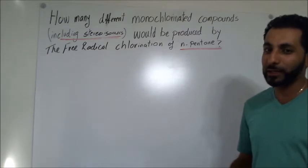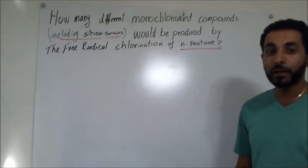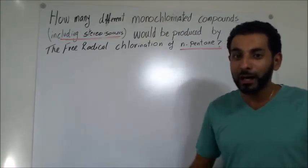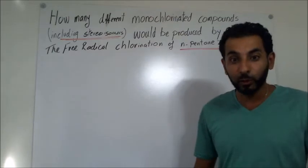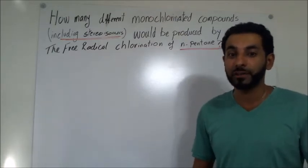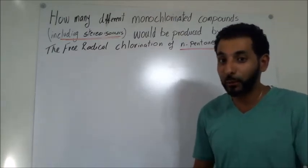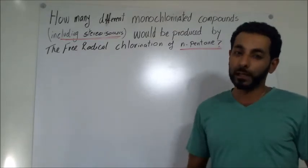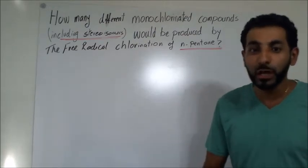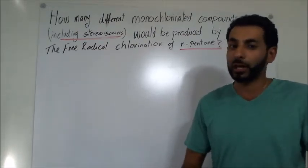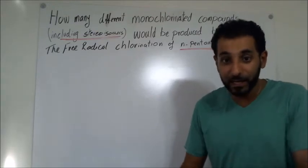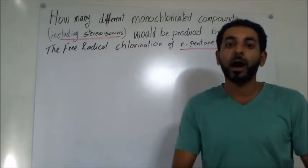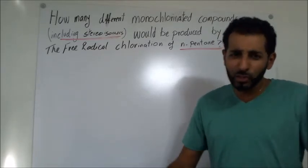Free radical reactions on alkanes can be done using chlorine or bromine — those are the two types of halogens we use. We cannot use fluorine or iodine. The fluorine reaction will be very exothermic, creating too much heat, which makes it very dangerous to use in the lab. However, if we use iodine, the reaction will be very endothermic, and it will favor the reactant side — the alkane plus I₂ — so we would not get any products.